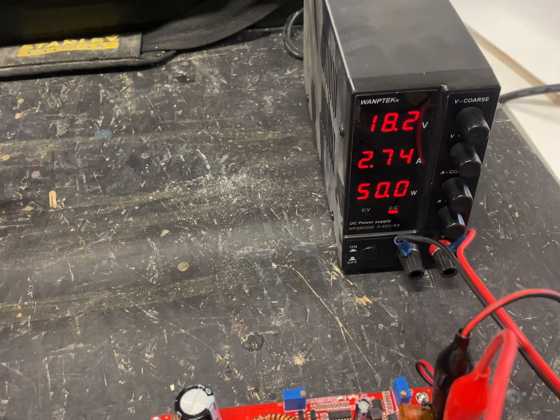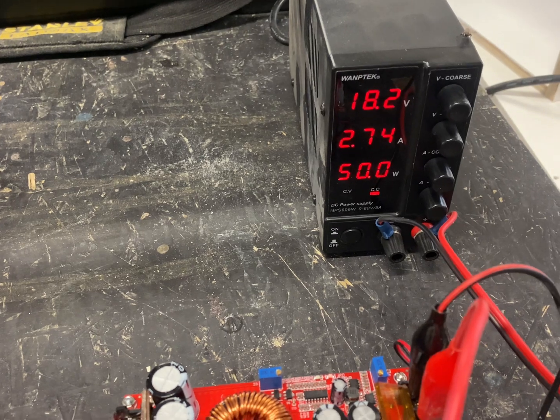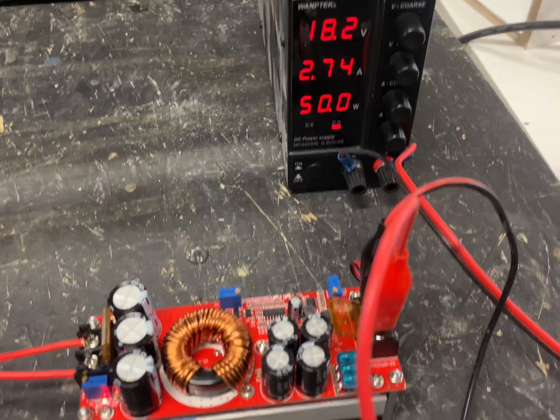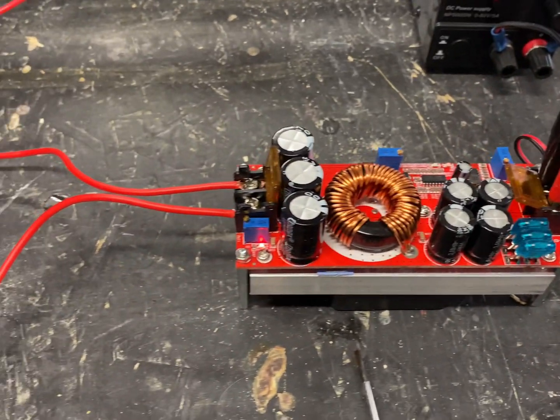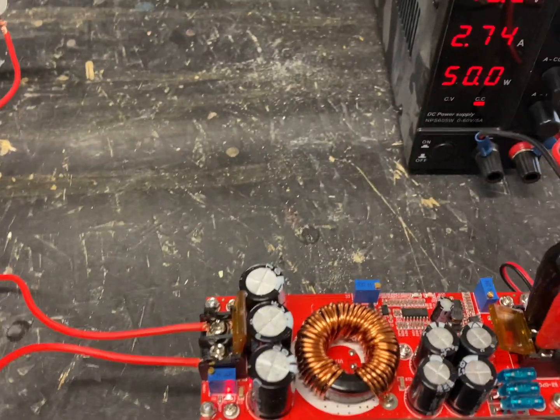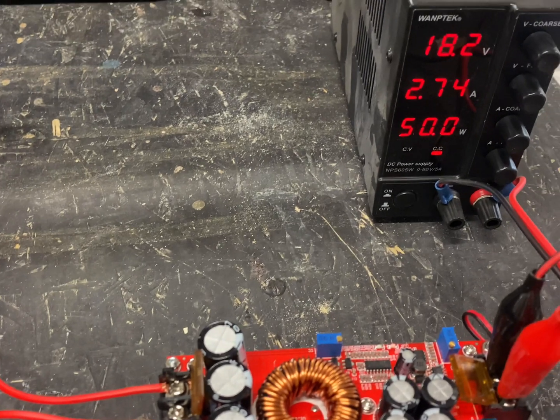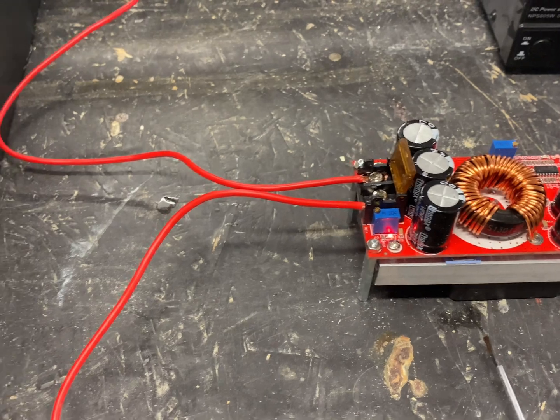This power supply is simulating a 50-watt panel going into the boost converter and out to the battery. It takes the 18.2 volts and boosts it up to 57 volts.